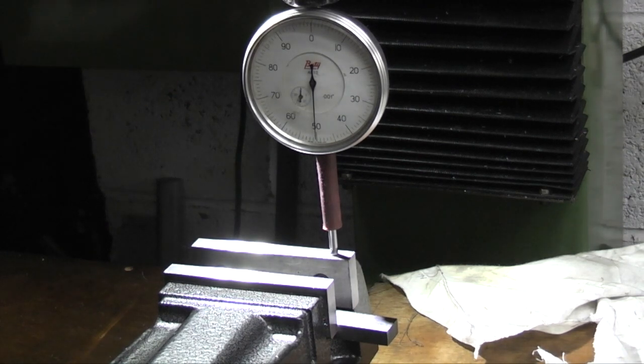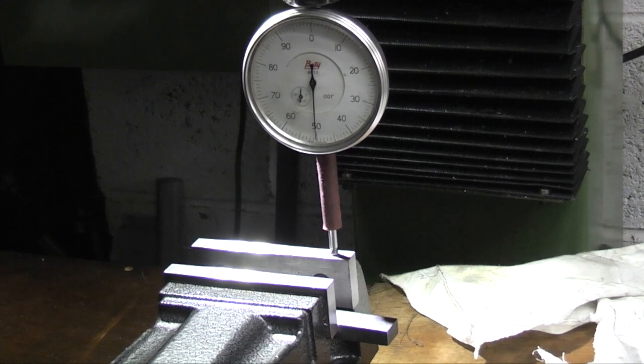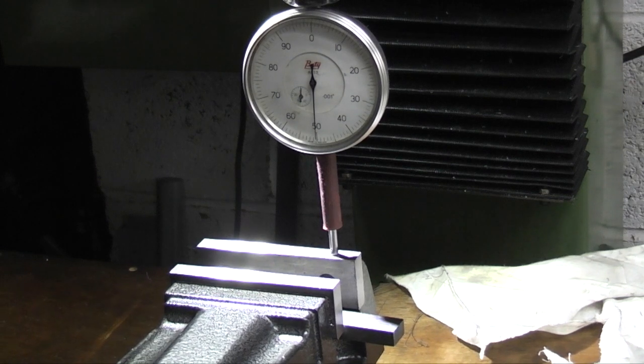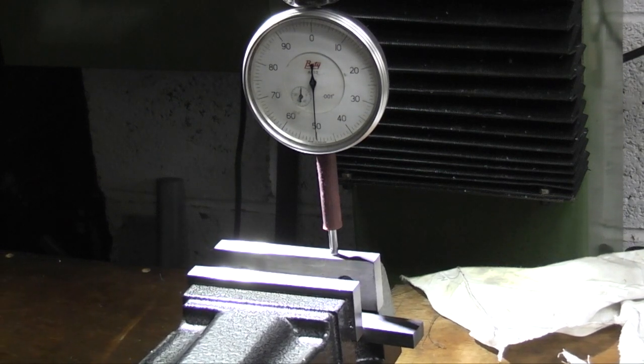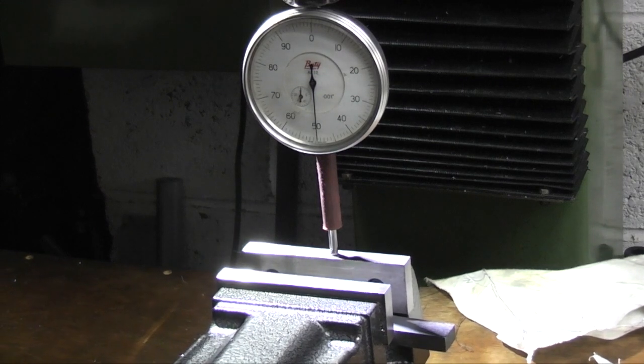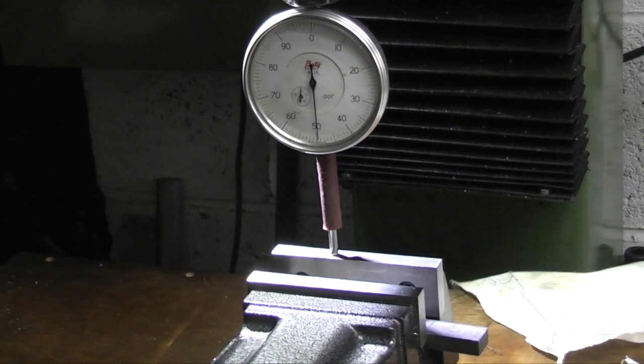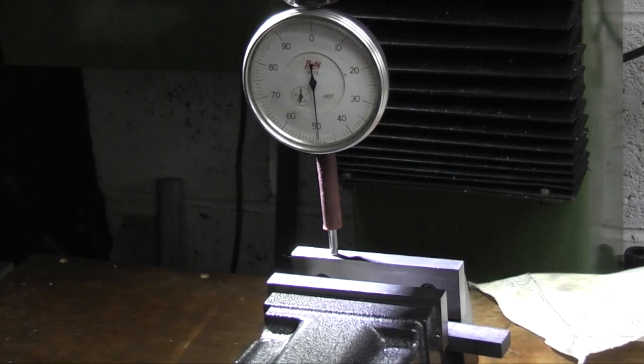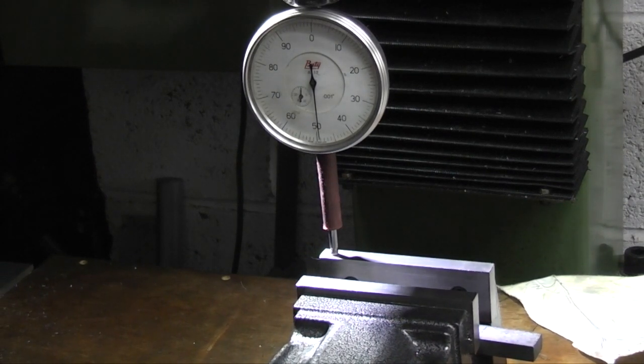So all I've done is held the dial indicator in a collet lightly, don't need to grip it too tight, set it to 50 because it's easier to see there, and I'll run the bed.